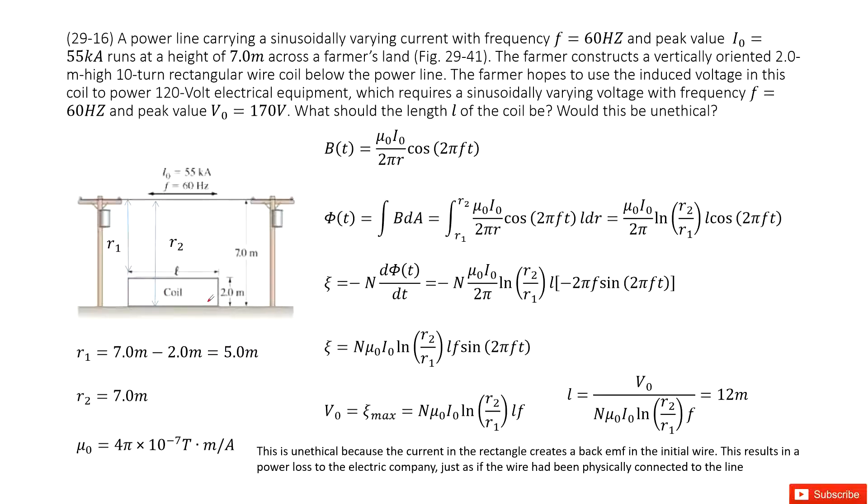And on the ground, a farmer constructs a vertically oriented loop. This is a wide loop. This loop we can see is a coil, and the height is 2 meters.